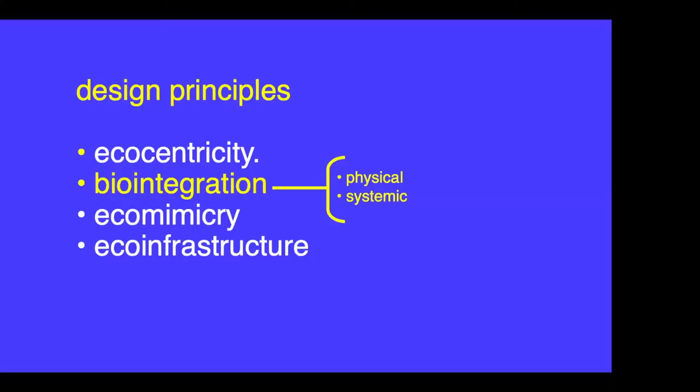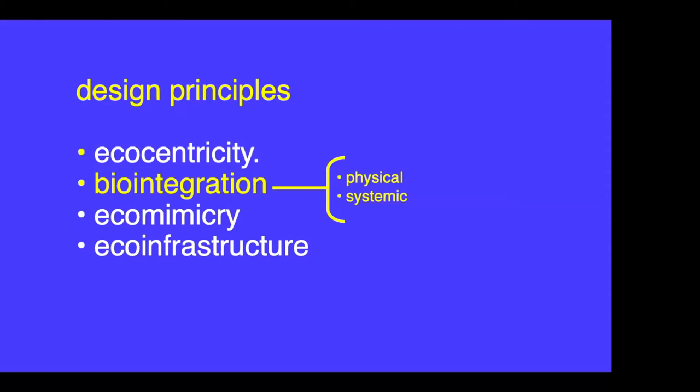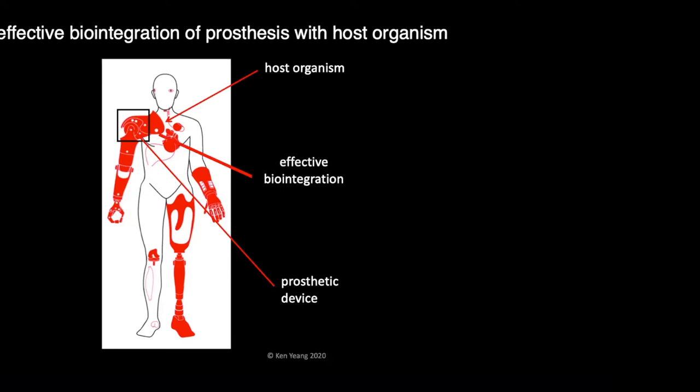So the principle of biointegration is that if we're able to biointegrate everything that we make and do with the environment in a seamless and benign way, there won't be any environmental issues. The crux of ecological design is effective biointegration, which is both physical and systemic. I draw an analogy with what doctors in the medical field do with prosthetic devices. A prosthetic device is something artificial, synthetic, and human-made, but attached to a host organism — the human body. Everything depends on effective biointegration of the prosthetic device with the host organism.